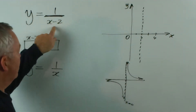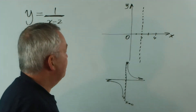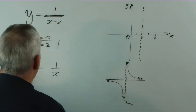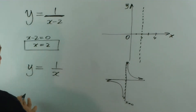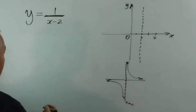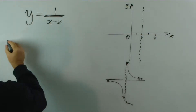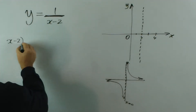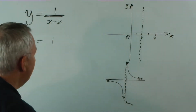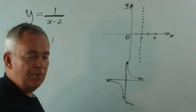Tampering with the x value relocates the vertical asymptote. Now, the y value hasn't changed. We multiply both sides of the equation by x minus 2, and we get this: x minus 2 times y equals 1. And we're looking at numbers that multiply to make 1, the same as we did in previous videos.